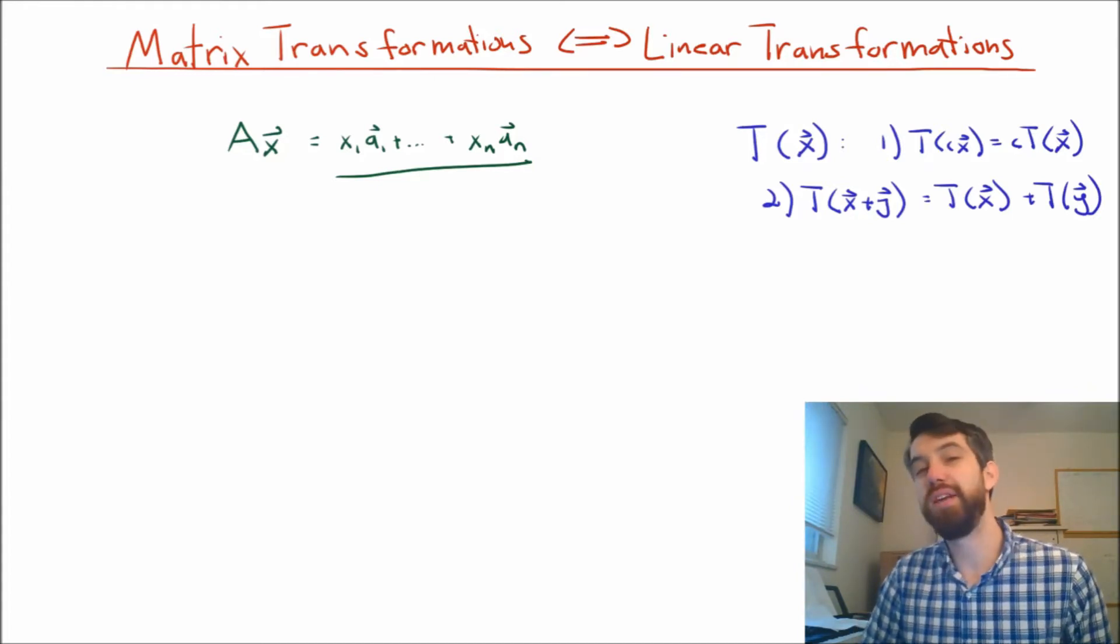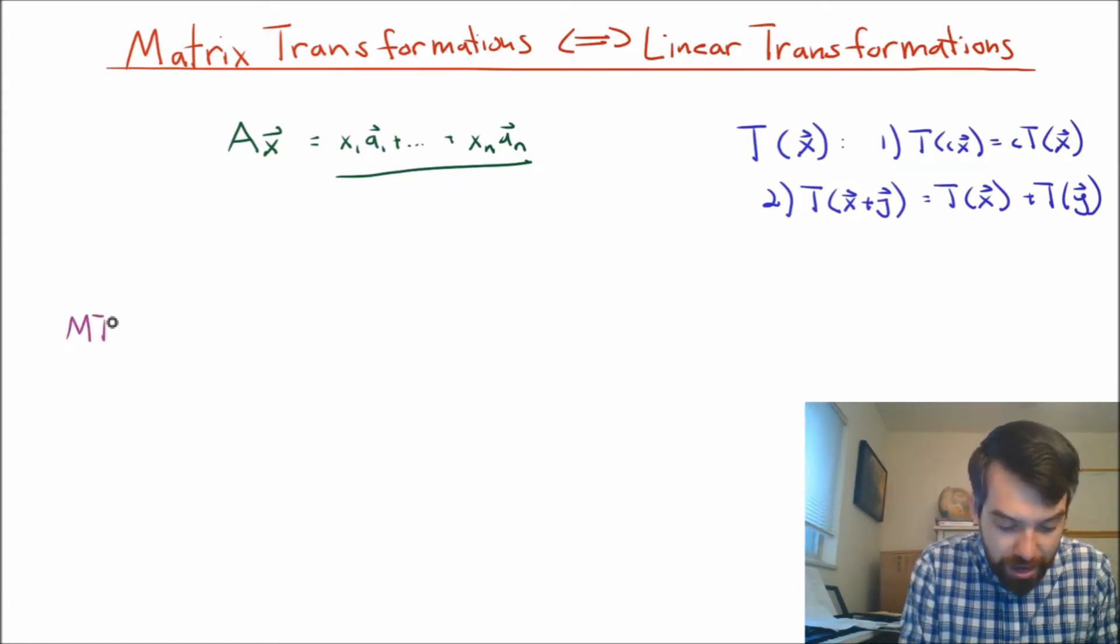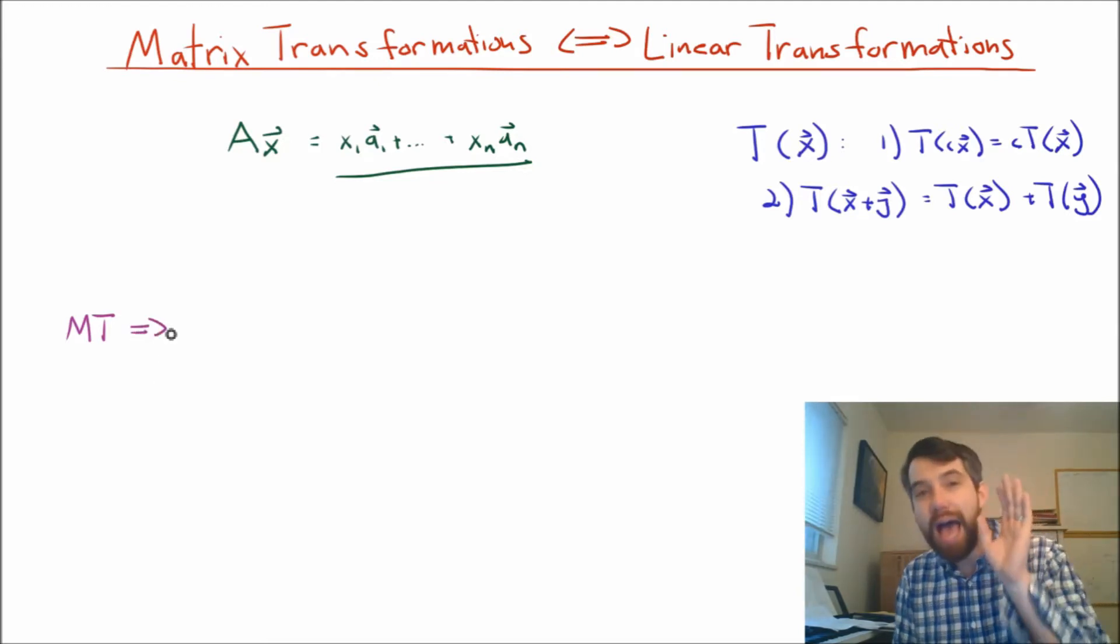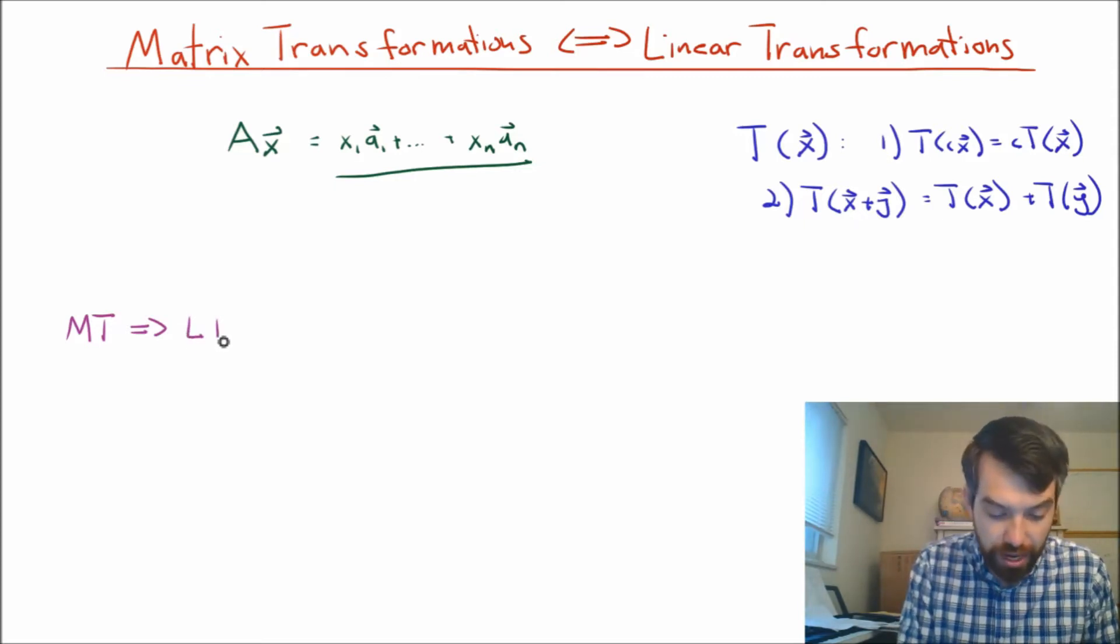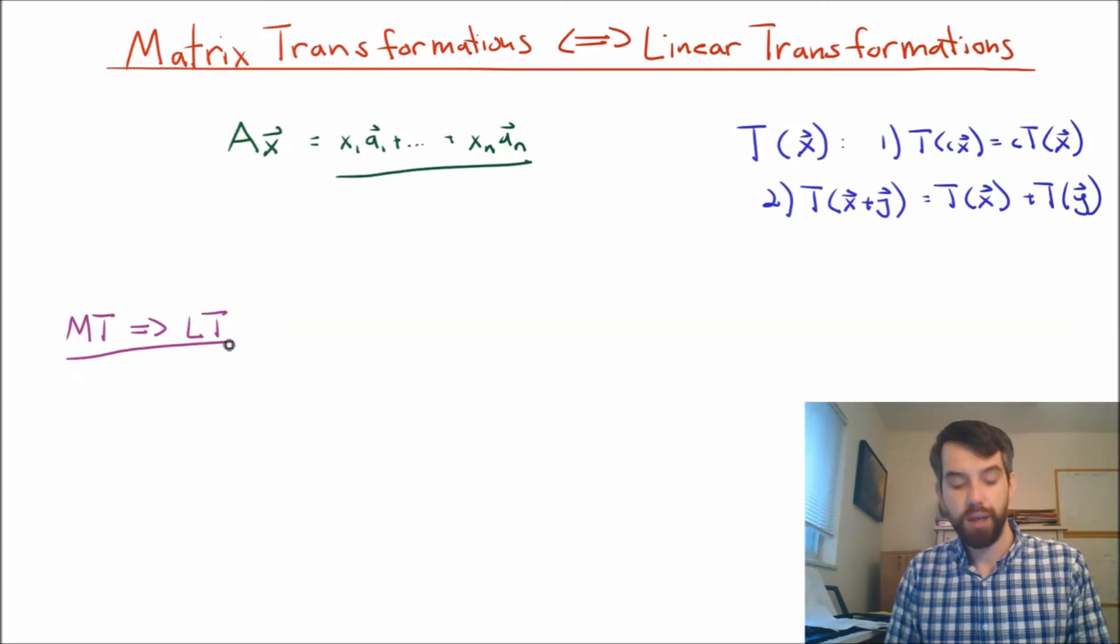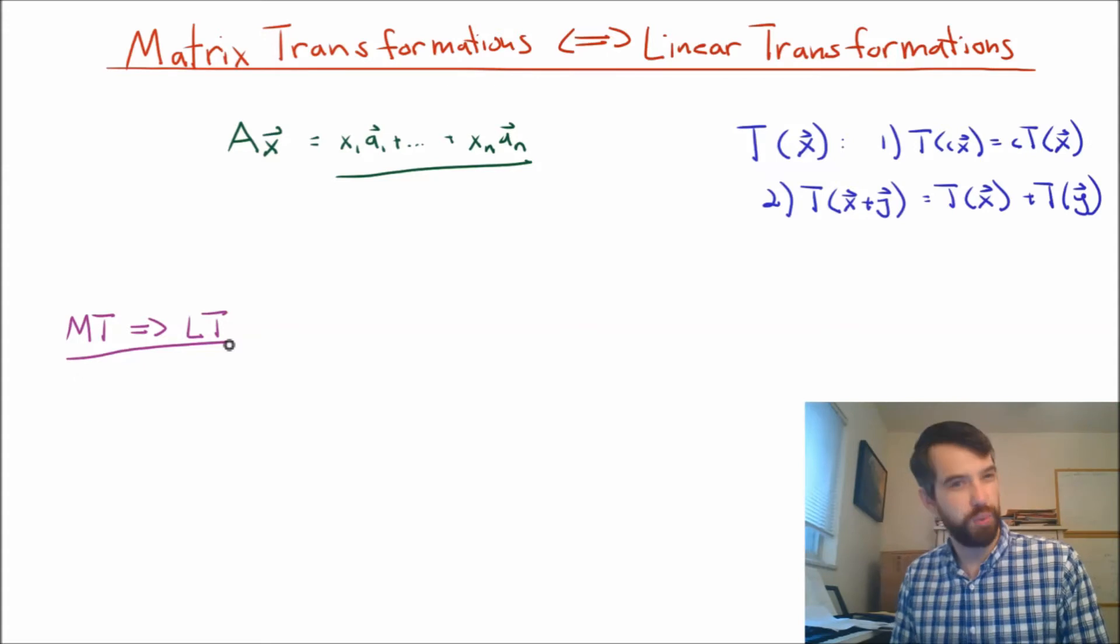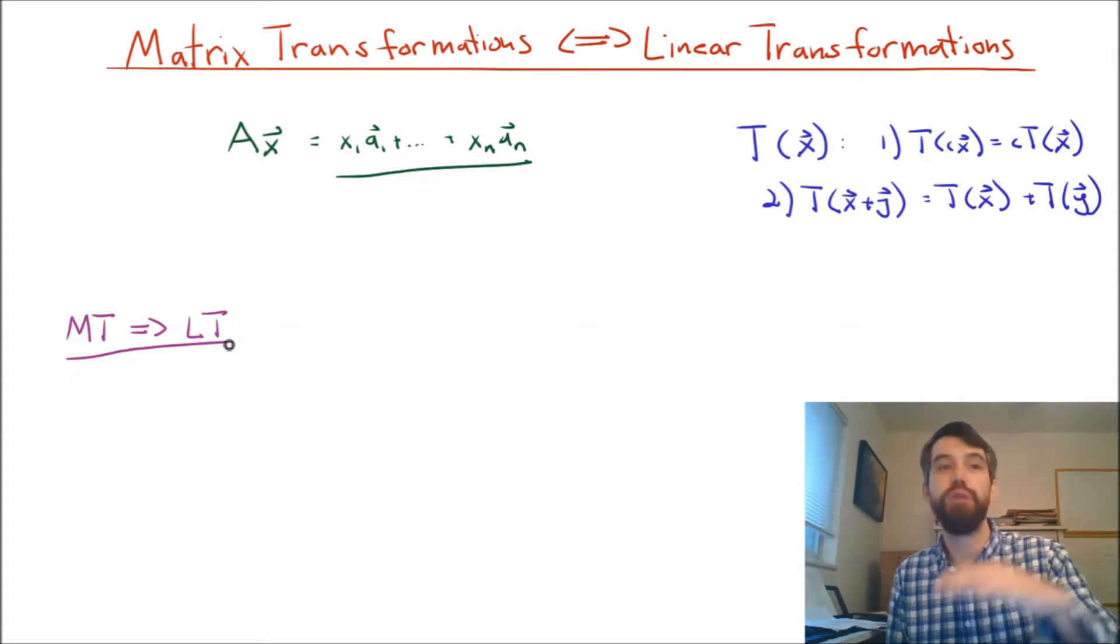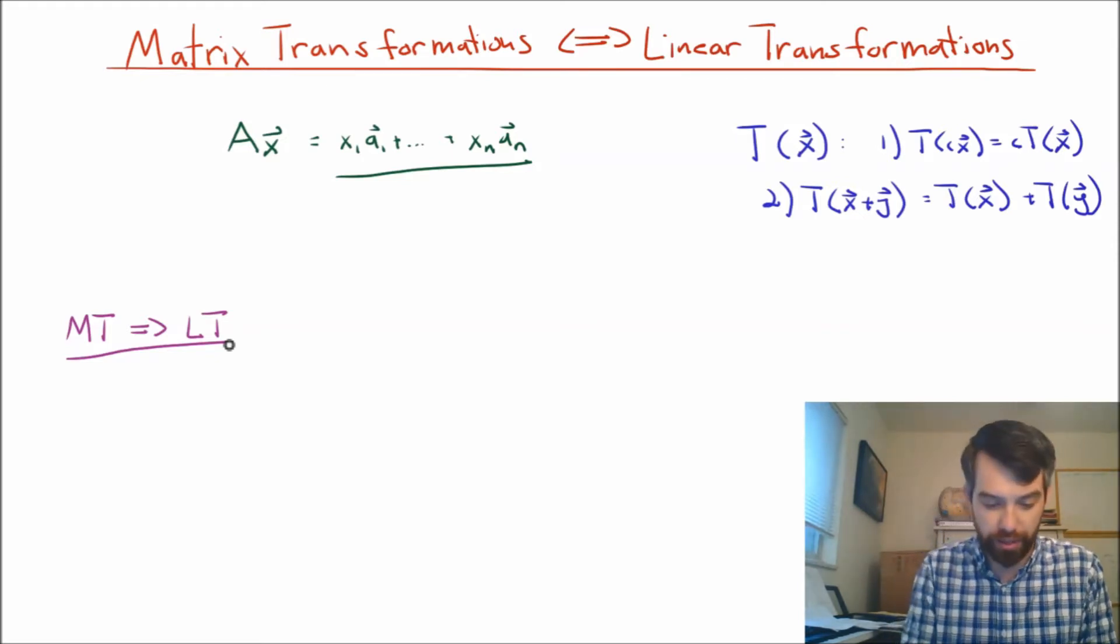The one direction is going to come to us a little easier than the other. In particular, if I want to look at matrix transformations, and I want to go this direction, I want to say that if I have a matrix transformation, it is going to be linear. So, in other words, I'm going to try to prove that a matrix transformation is going to be a linear transformation. However, this is going to just sort of nicely follow from the algebraic properties that we've already studied for matrix vector multiplication. We want to get the one and the two, the two different properties of being a linear transformation, and they're going to follow pretty quickly. I'll show you what I mean.